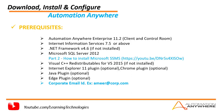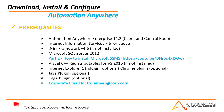One important thing is the corporate email ID — it is mandatory. In a real-time scenario, I am going to show you how to install client and control room. For practice purposes, we need a corporate email ID to download the software and to connect to the control room provided by Automation Anywhere. An example corporate email ID would be amir@corp.com. These are the prerequisites before installing Automation Anywhere Enterprise 11.2.